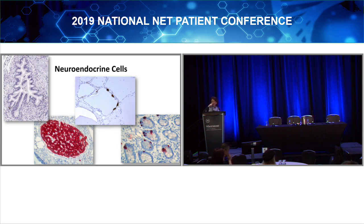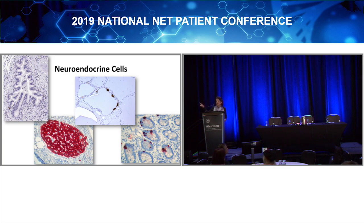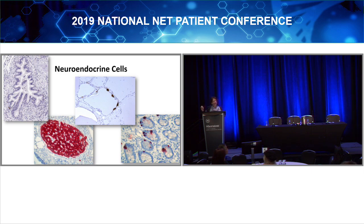I'm starting with a picture that some of you may have seen before if you've been to my talks. It's one of my favorite pictures showing that endocrine cells are found in lots of parts of the body. The top left is actually a picture of your lung. The next in the middle is the thyroid. The bottom right is a small bowel. And off to the left is an islet of Langerhans from the pancreas. The little cells that are brown are being highlighted by a marker of neuroendocrine cells.